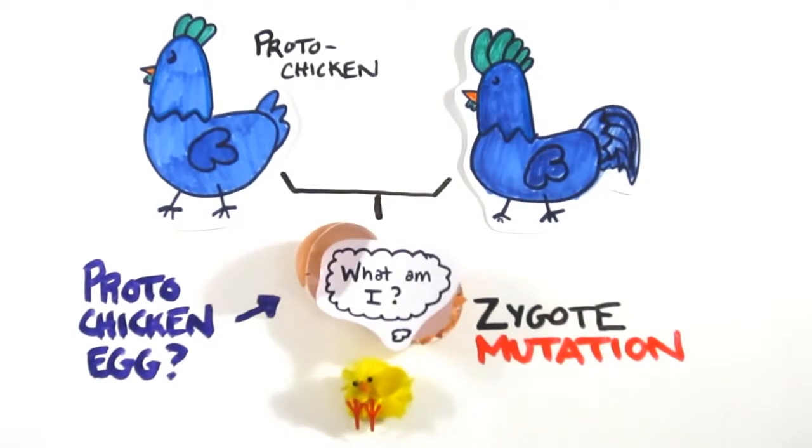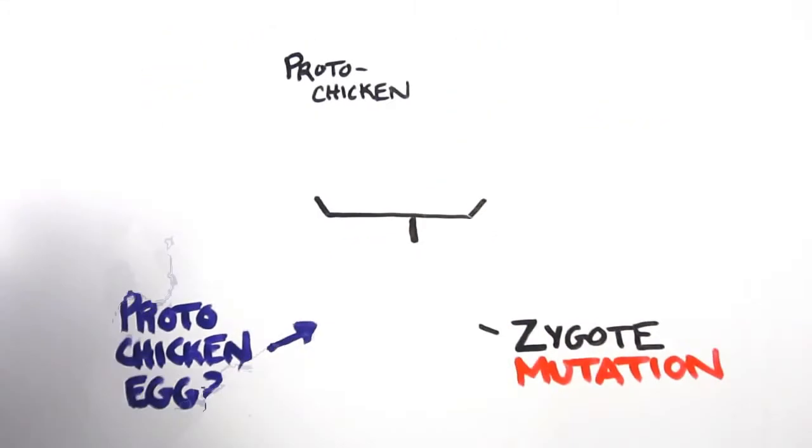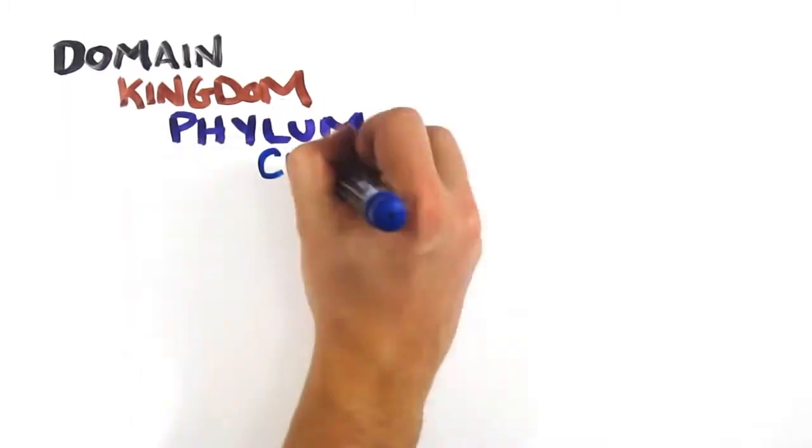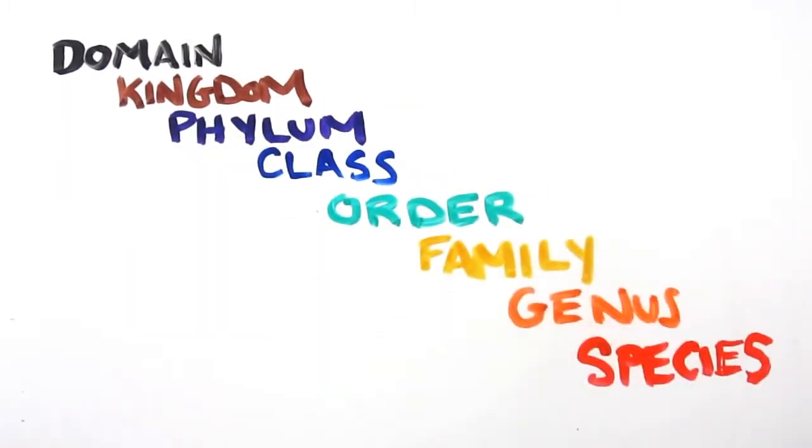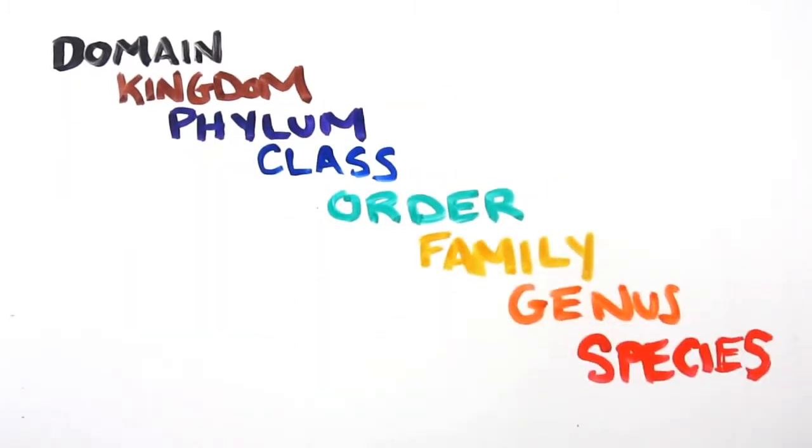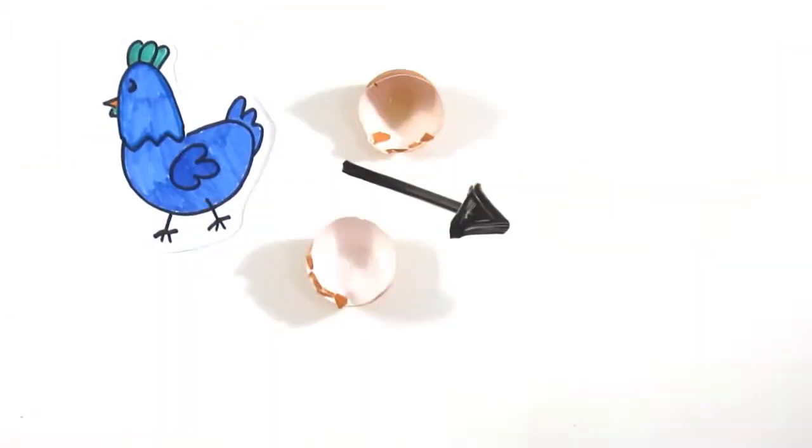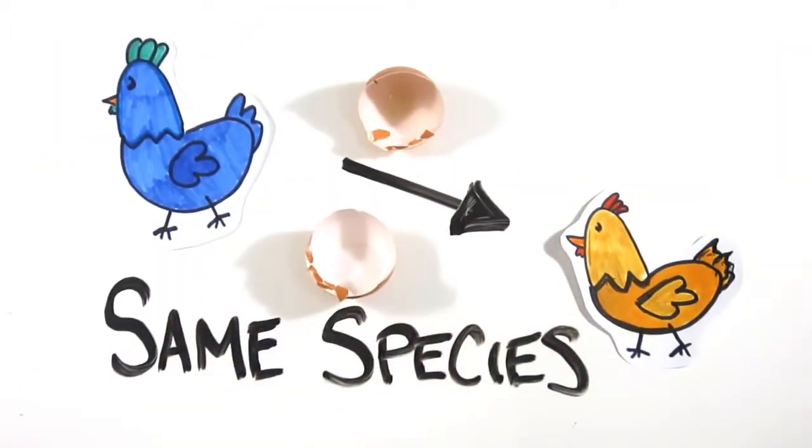However, no one mutation can ever really constitute a new species. Even though we humans like to classify all creatures into different groups and names, this is based on how things currently are and not how they were millions of years ago. The process of evolution is so gradual that no one proto-chicken to chicken birth could really be considered a new species at the time.